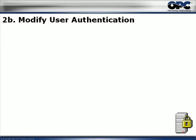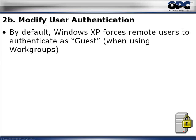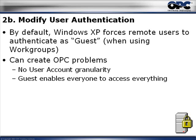Now let's talk about user authentication — we'll need to modify it. By default in Windows XP, all users are forced to authenticate as guests when using workgroups. This affects both Windows XP Home and XP Professional in a workgroup. This creates OPC problems: there is no user account granularity, because every user that comes in is authenticated as a guest. There's no way for the OPC server to allow person 1 but not person 2 — it sees both as guests, so you're giving everybody access or nobody access.